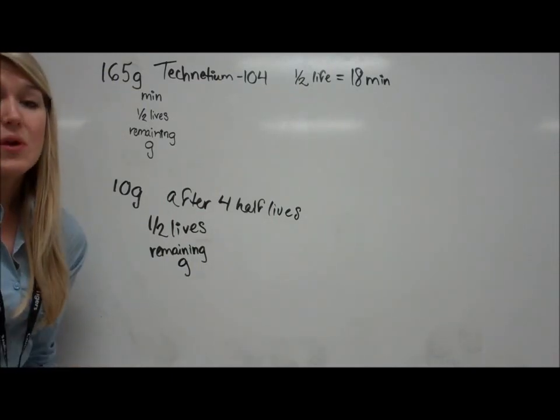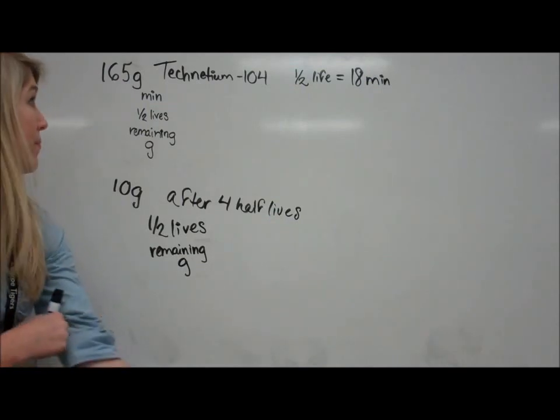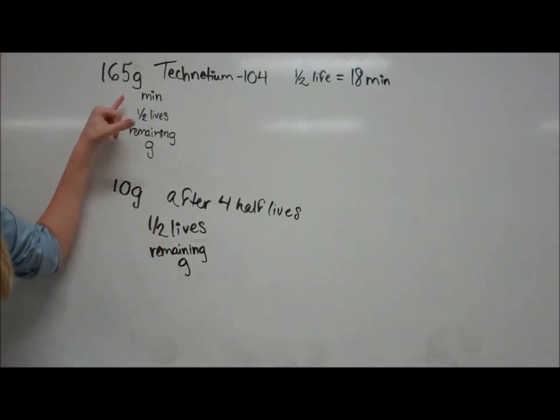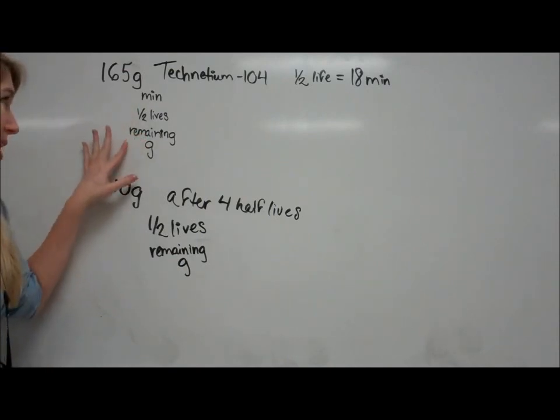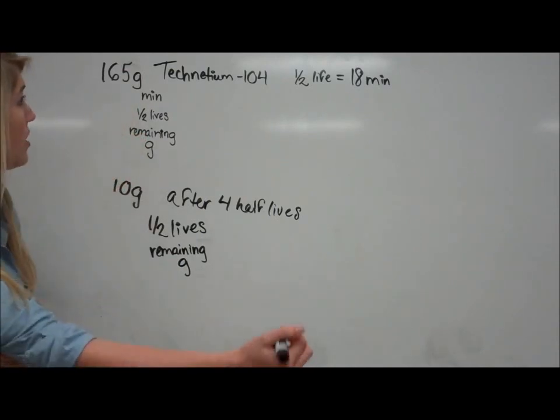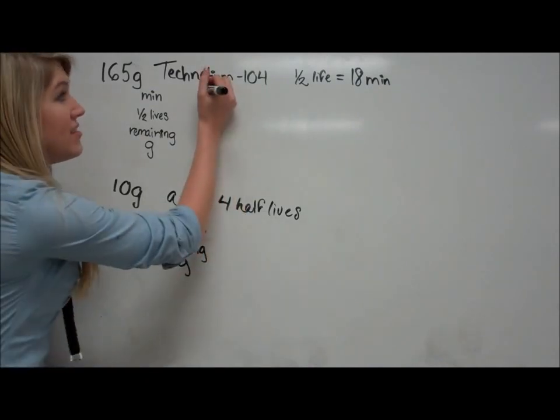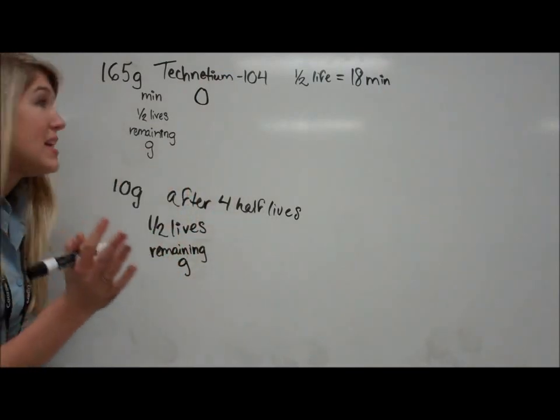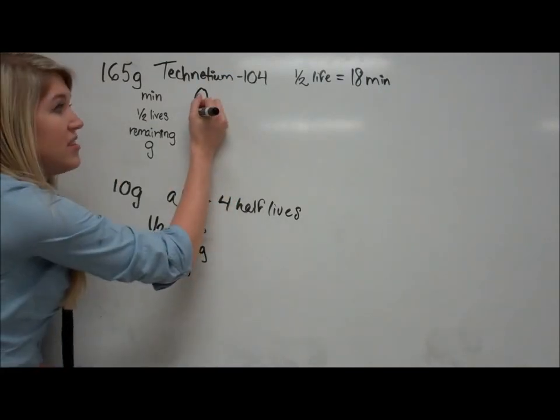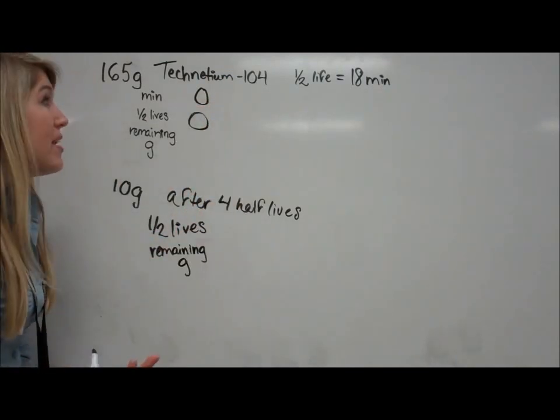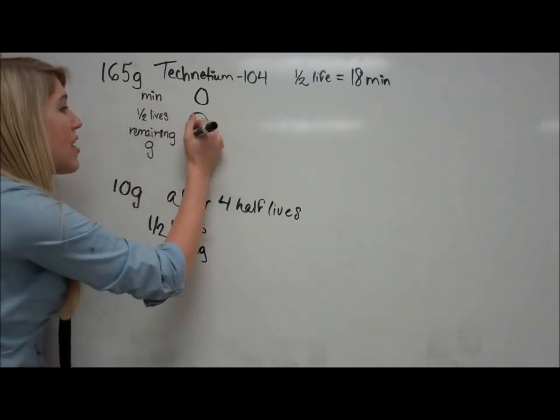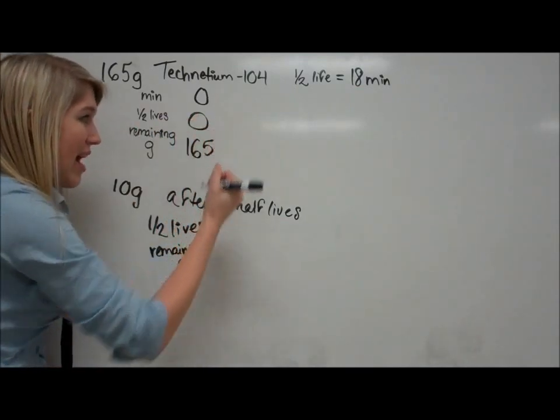This is really the easiest way to set up a half-life problem. You can write minutes, half-lives, and remaining grams. I like to start at zero so I know where I'm coming from. So at zero minutes, after zero minutes have gone by, you've had zero half-lives, nothing's happened yet, and you're starting with 165 grams.